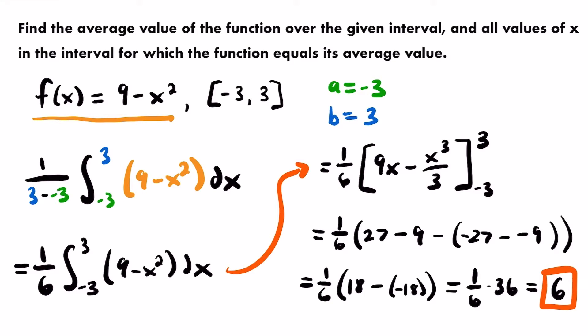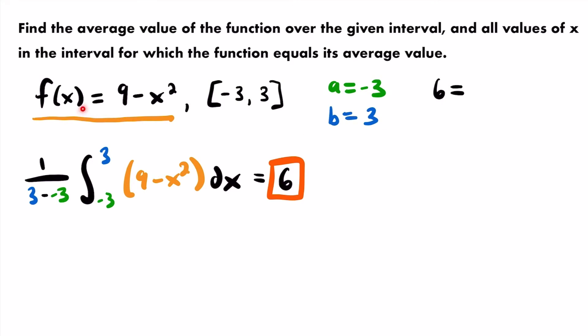That's the solution to the first part. Now we also want to find all values of x in the interval for which this function equals its average value of 6. To do that, we set the function equal to 6 and solve for x, which tells us the x values where f(x) equals that average value of 6.